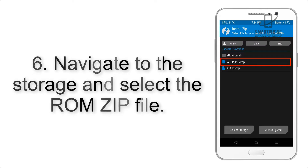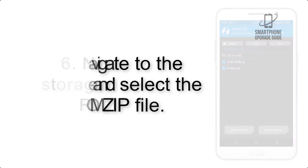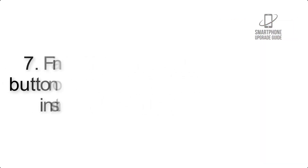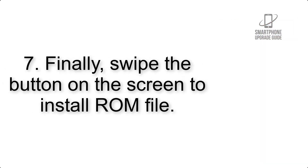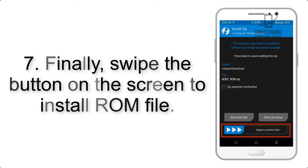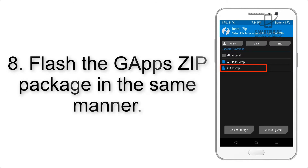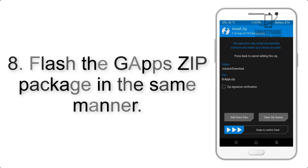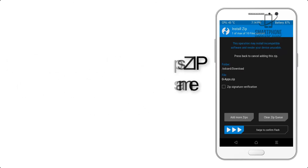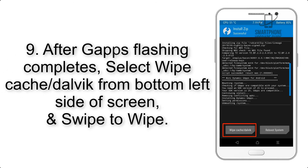Step 6: Navigate to the storage and select the ROM zip file. Step 7: Finally, swipe the button on the screen to install the ROM file. Step 8: Flash the gapps zip package in the same manner.